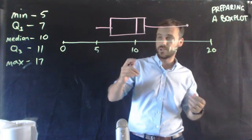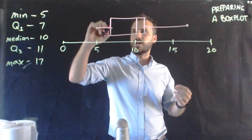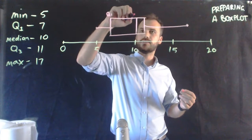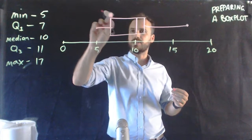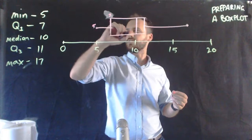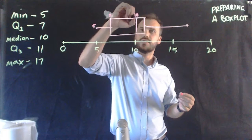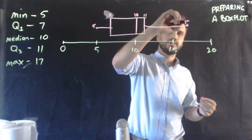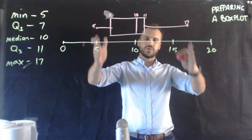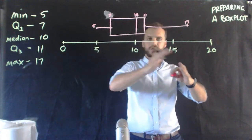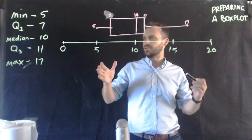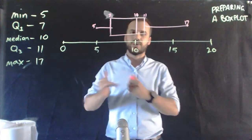That's why it's called the box and whisker plot. We can label all of this — we should label it with the numbers: 5, 7, 10, 11, 17. Sometimes it's labelled that way, sometimes it's not labelled that way — it's just obvious from the plot. So there is our box plot using our five number summary.